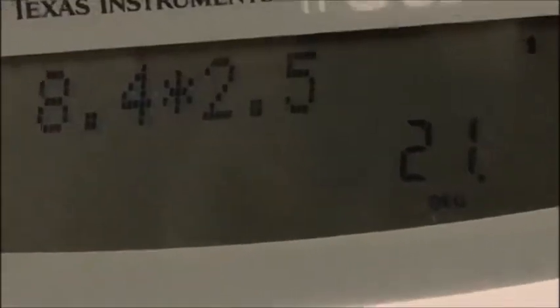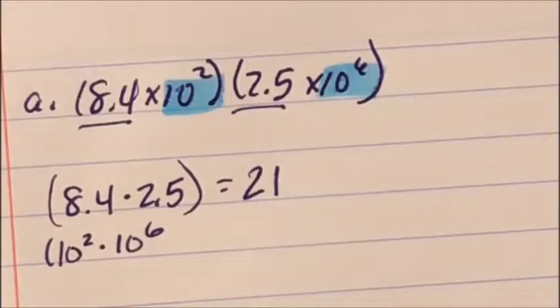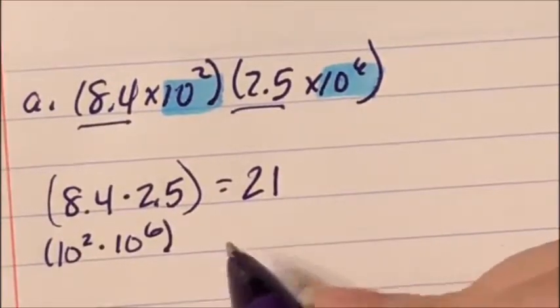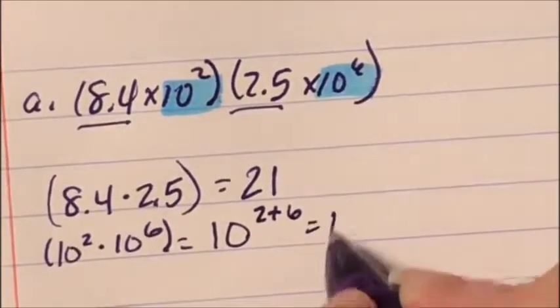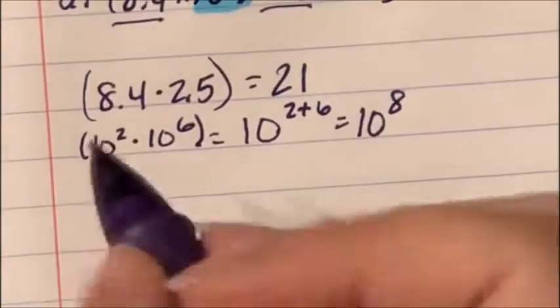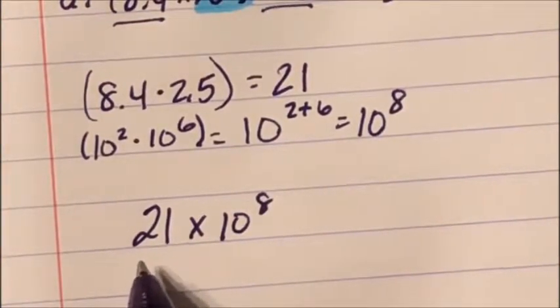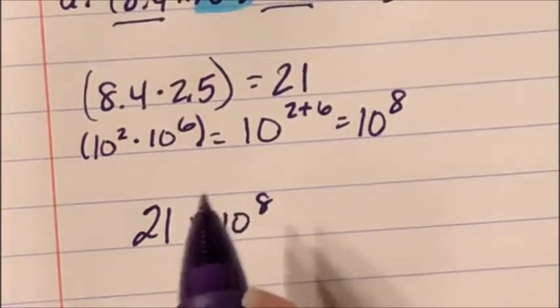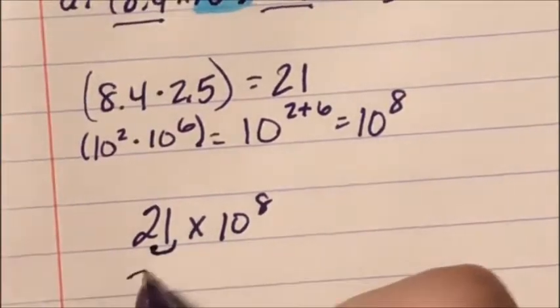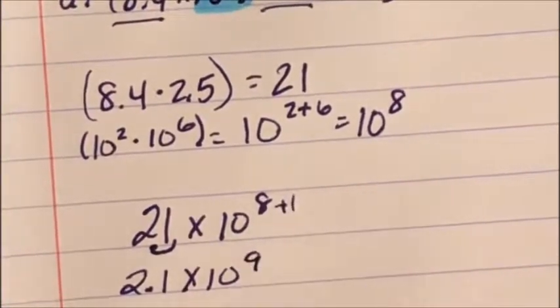You can use a calculator — that's okay. So I have 21 times 10⁸, but 21 is not in scientific notation since it must be between 1 and 10. I move the decimal to get 2.1 and add one to the exponent: the answer for letter A is 2.1×10⁹.